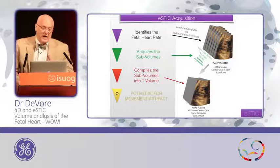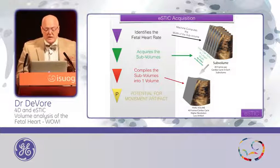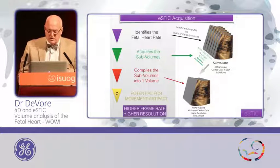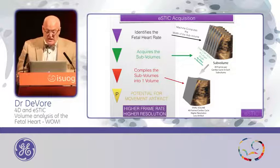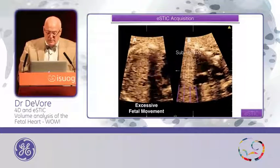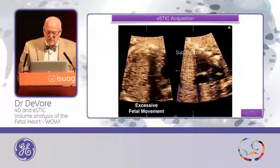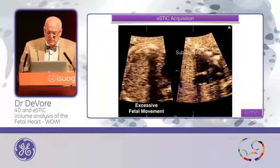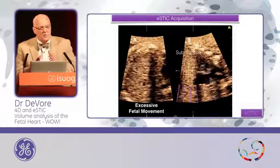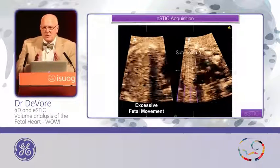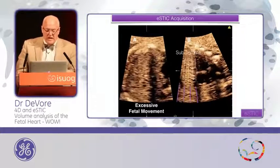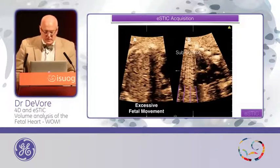There is a potential for artifact. If the fetus moves, the E-STIC — because it sweeps much faster and acquires more data than the mechanical STIC and has a higher frame rate — we still sometimes see this artifact. On the screen, you can see purple lines located here and here, which are the sub-volumes acquired. Because of movement, they jump out at you and show artifact. This is something we don't see very often, but that's what the sub-volumes look like when demonstrated.